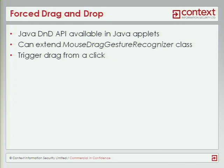So what we can do is, instead of saying a drag-and-drop consists of the user holding down the mouse button, moving the mouse a certain number of pixels and then releasing, we can actually say: when the user holds down the mouse button, then we're going to start the drag-and-drop. And because we can do that, we can drag text from a Java applet using just a click instead of a drag. So we're back to the same user interaction as with traditional clickjacking — just using a single click to do something interesting, in this case injecting text into a field.